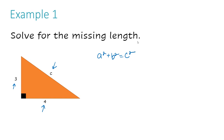Now I'm going to fill in everything and solve. My A and my B can be either leg — it doesn't matter which one. You don't have to say A is the smaller or B is the larger. It's going to work out correctly either way. However, C always has to be the hypotenuse. Let's plug in 3 and 4: 3 squared plus 4 squared equals C squared.